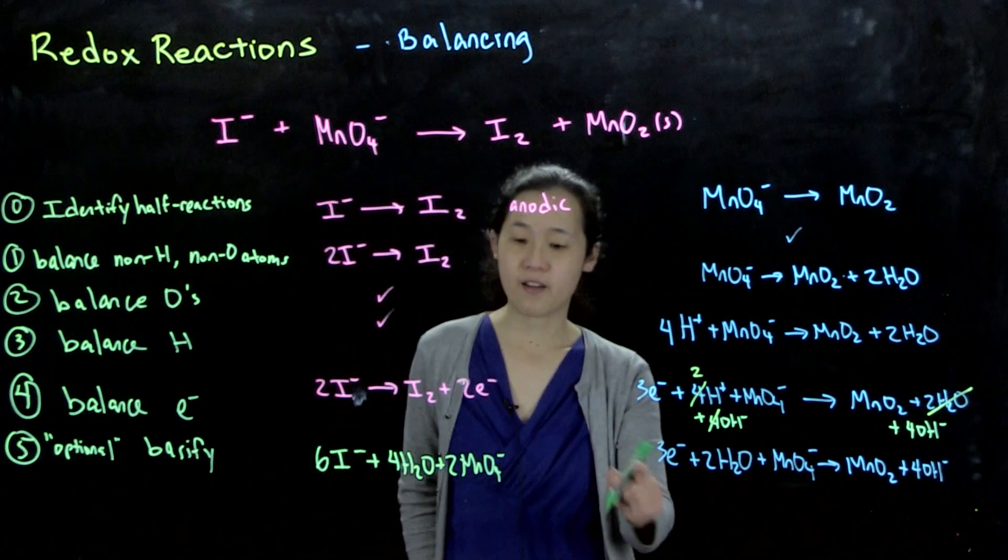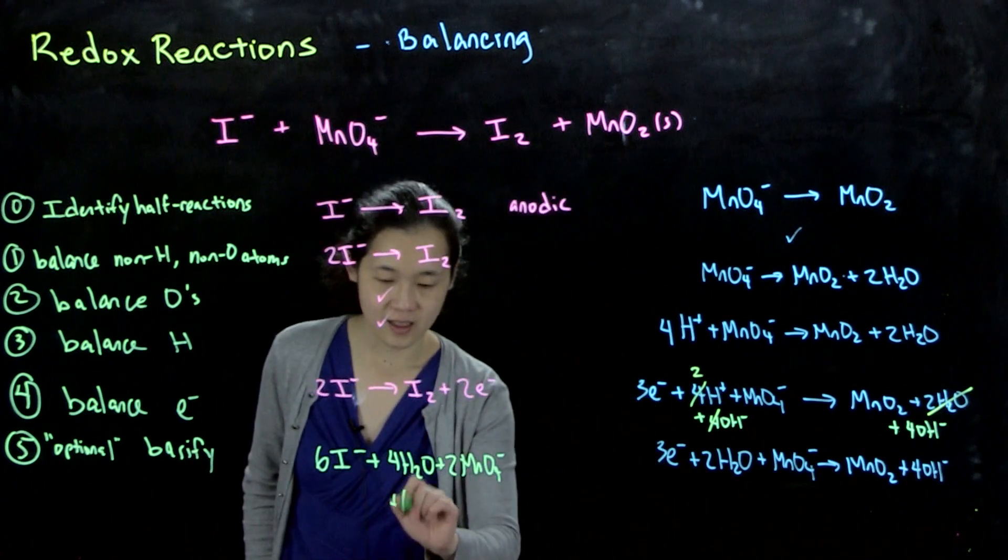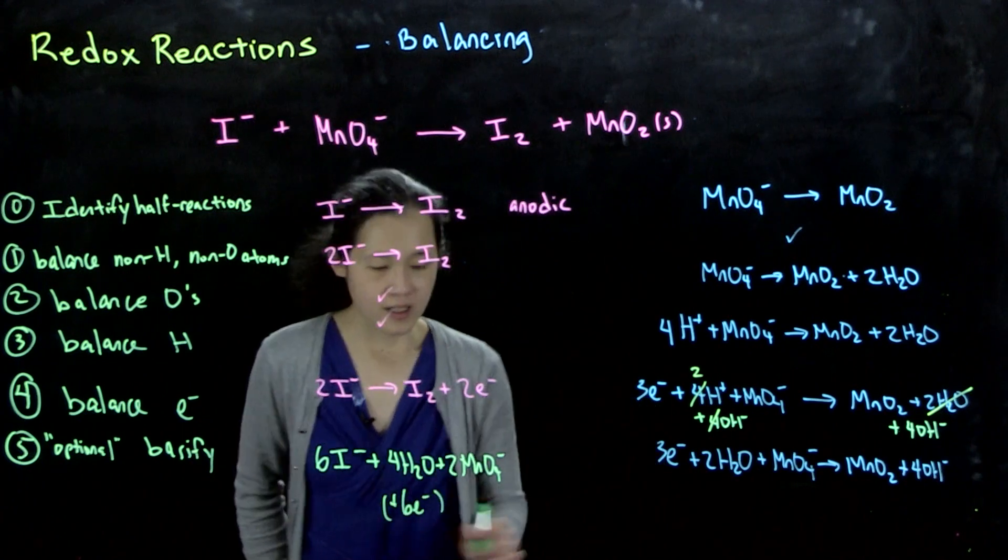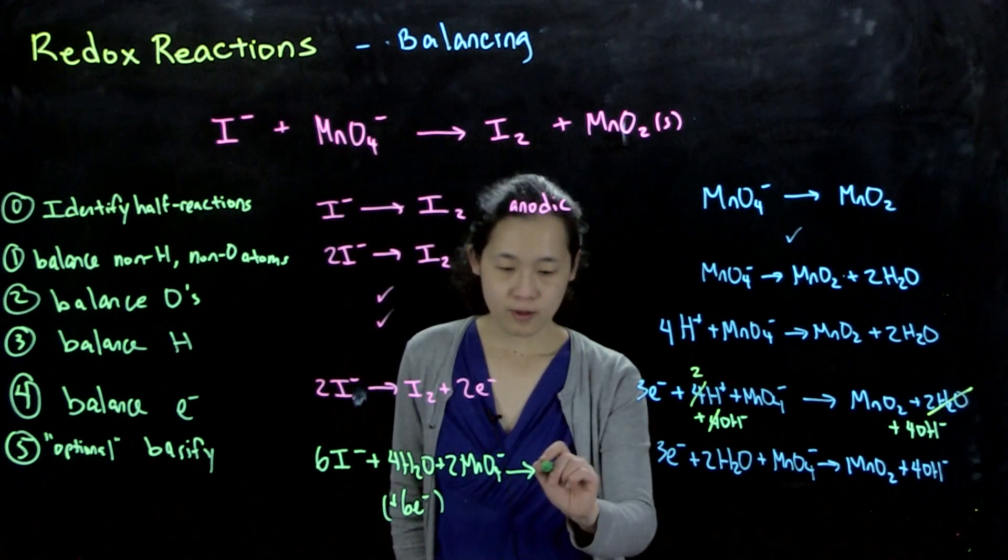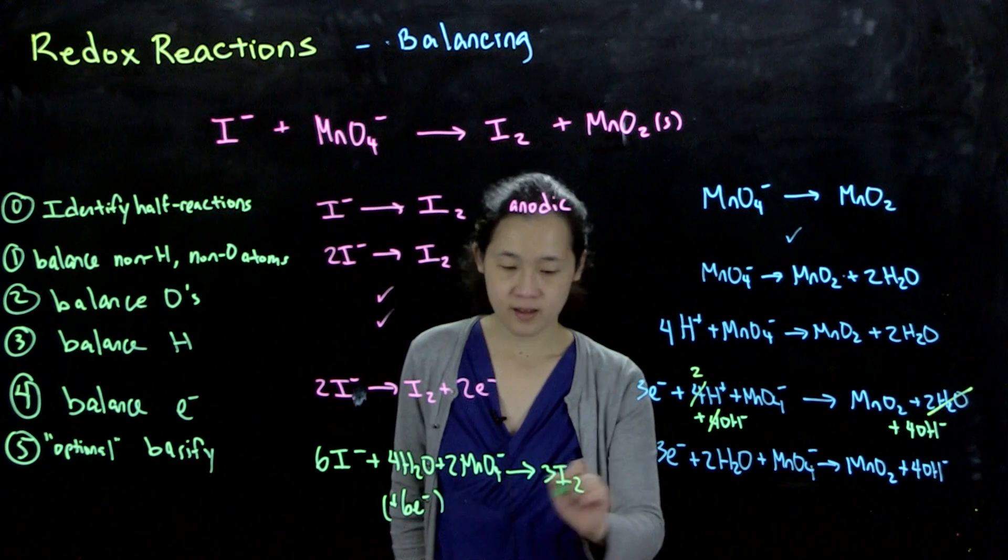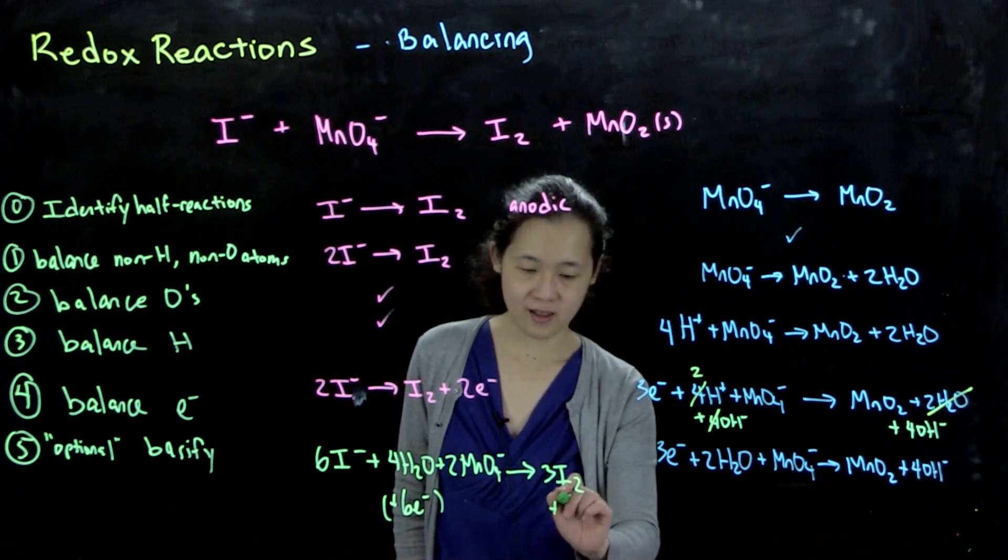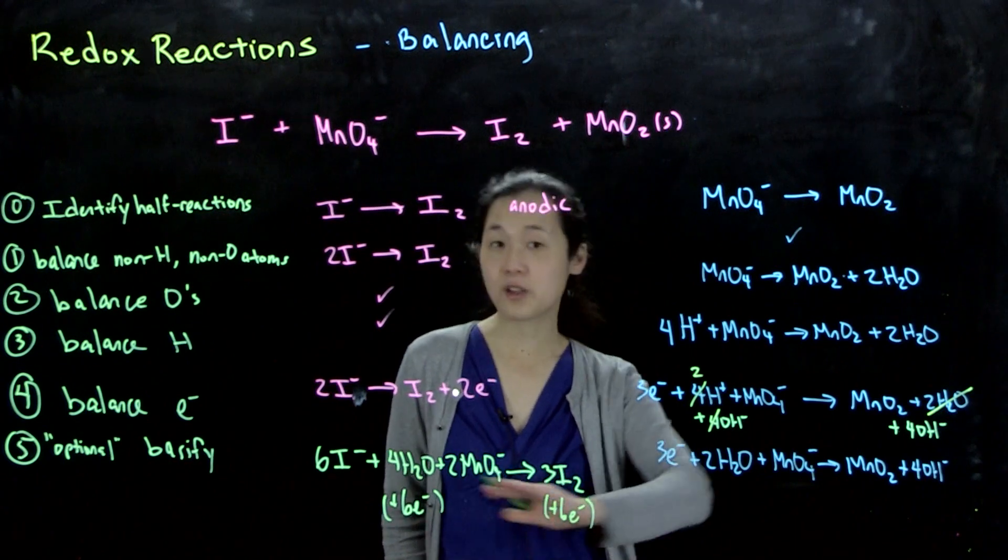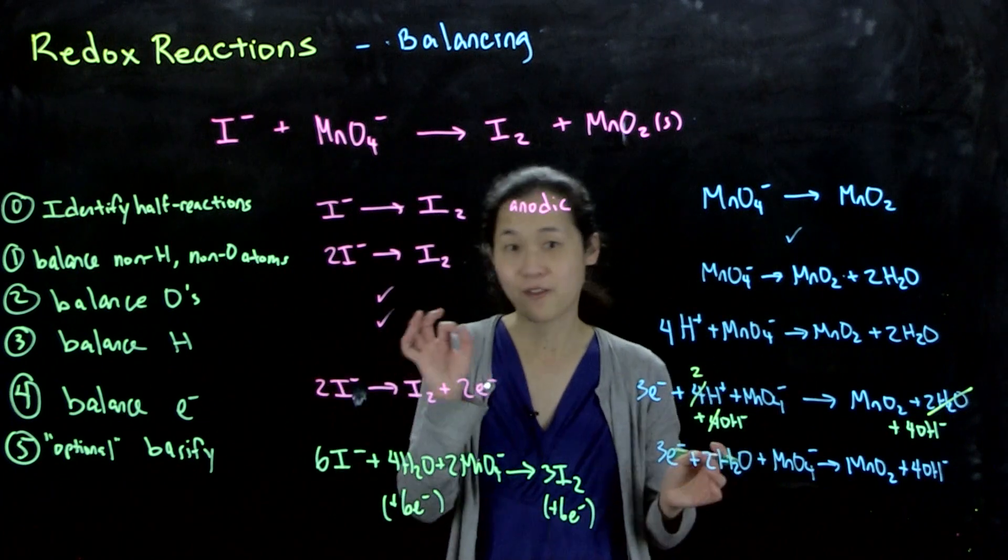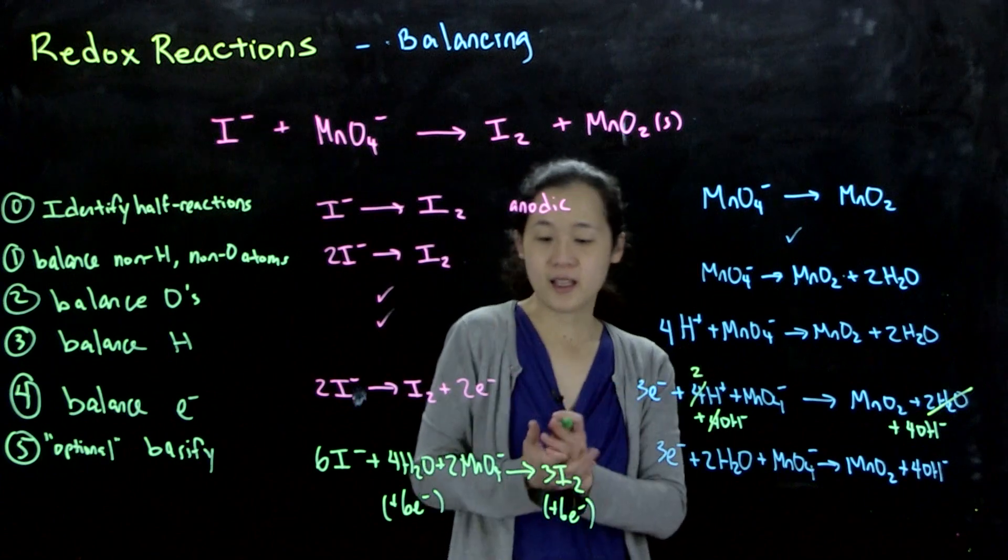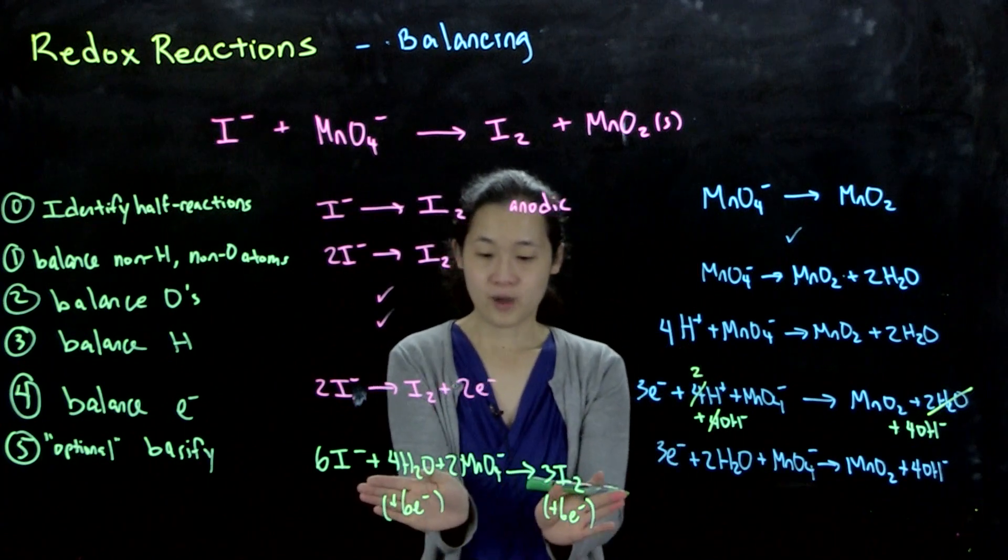What we'll get out is 6I⁻ + 4H₂O + 2MnO₄⁻, and then we'll have kind of plus six electrons over here. We don't include electrons in the final one because you don't ever have free electrons floating around unless you're doing something fancy with cryptands or electrodes. So we don't include them in the final one.